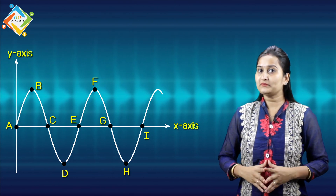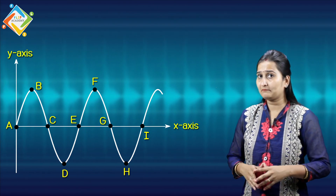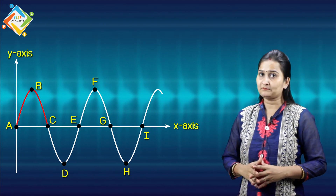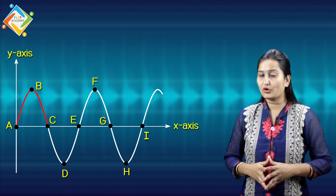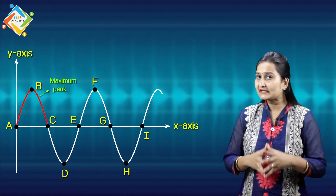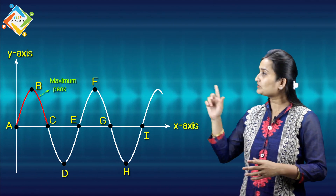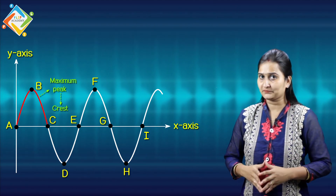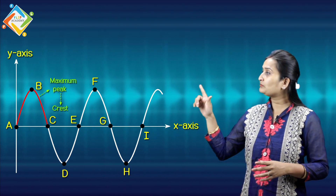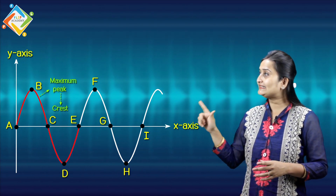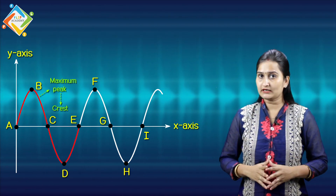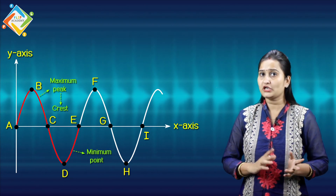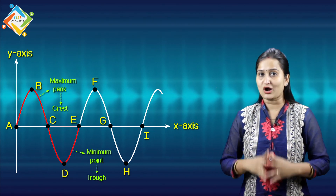Let's take a look at this diagram. The point at maximum peak — we call that the crest. Similarly, your points C, D, E represent the valley, that is the minimum point — so we call it a trough.